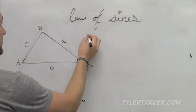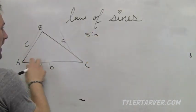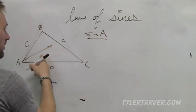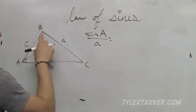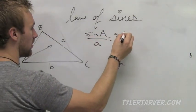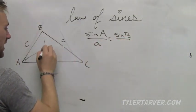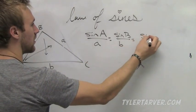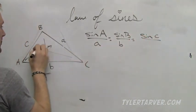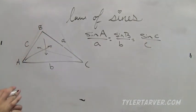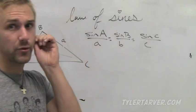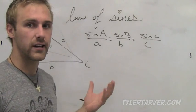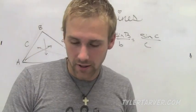We'll do: sine of angle A over its opposite side, is equal to sine of another angle over its opposite side, which is equal to sine of C over its opposite side. You can set up a proportion with any of these — you only need two to solve it. If you have two angles and a side, or two sides and an angle, you can find it, in any triangle. It doesn't have to be a right triangle.